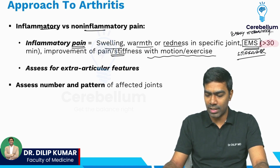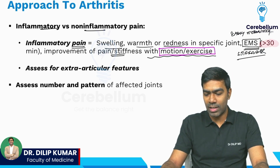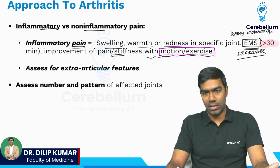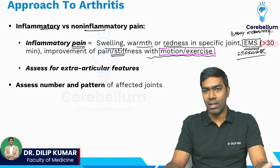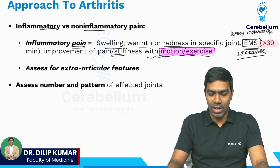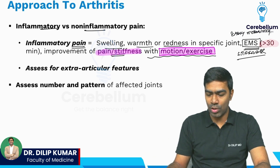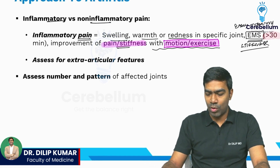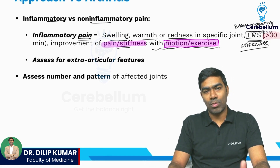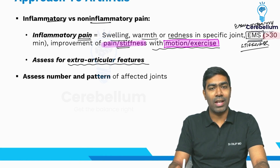The pain and stiffness in inflammatory arthritis is going to improve with motion and exercise — that's a very important point. In non-inflammatory arthritis like osteoarthritis, pain will actually increase with excessive movement and exercise. But in inflammatory arthritis, pain is going to improve with motion and joint usage.